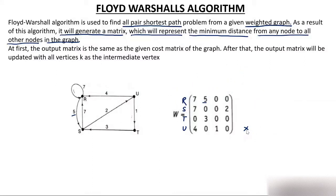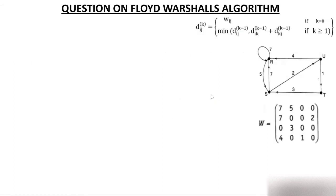The final matrix will represent the minimum distance from any node to all other nodes in the graph. I have to create a matrix such that by watching it I can say what is the minimum distance from R to R, R to S, R to T, S to T, and so on. So let's start with the final matrix. Now, see how many nodes you have — you have 4 nodes, so you have to make 4 matrices.